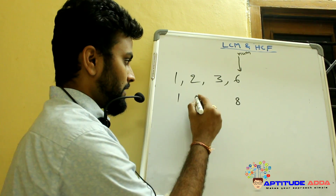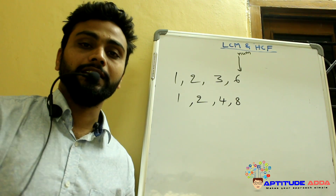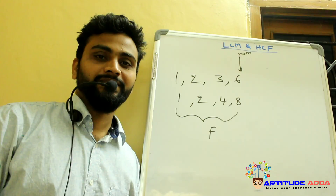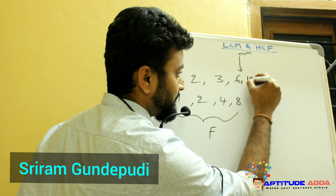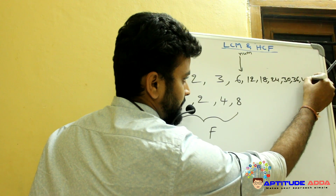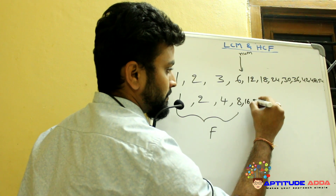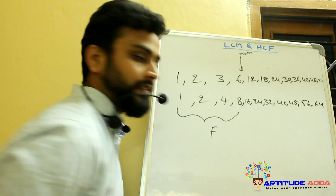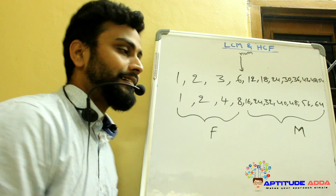1 into 8 gives you 8, and 2 into 4 gives you 8. So 1, 2, 4 and 8 are the factors of 8. Similarly, multiples of 6 are 6, 12 and so on, and multiples of 8 and so on. These are the multiples of 6 and 8.